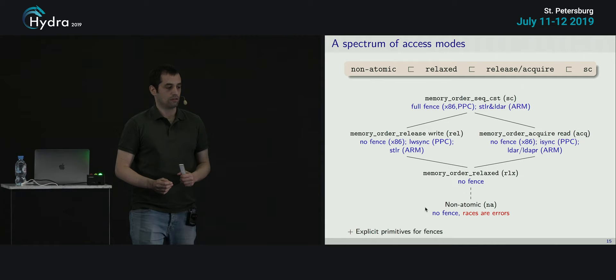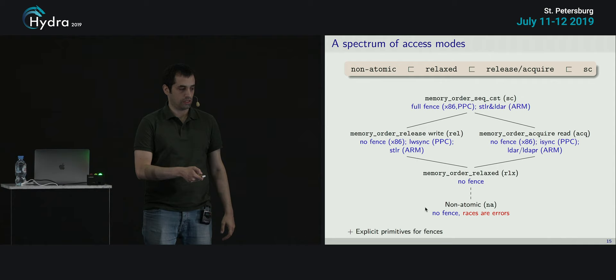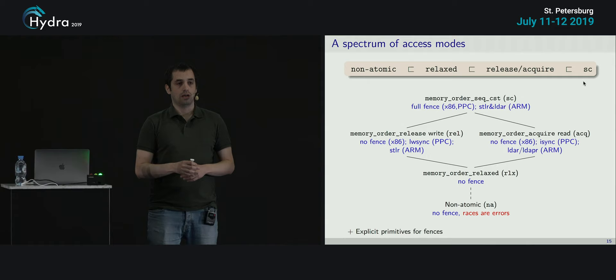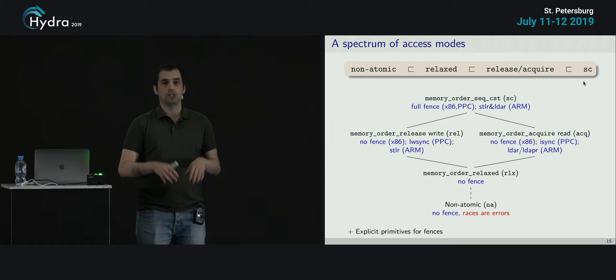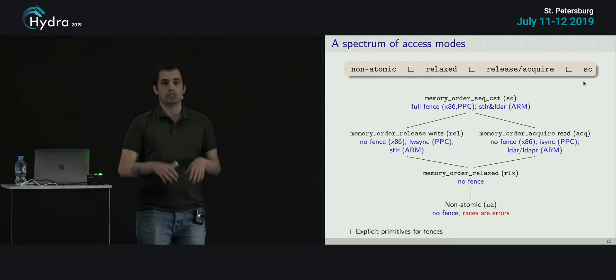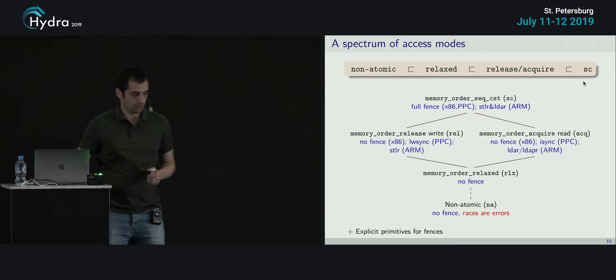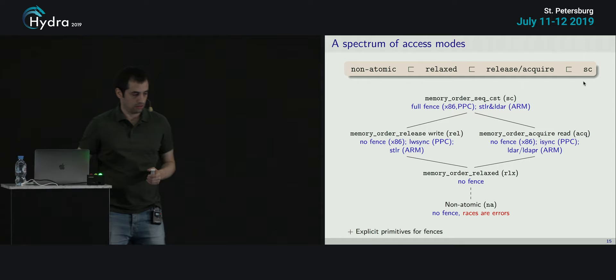Inside the atomic side, we have several access modes: relaxed accesses, release-acquire, and SC (sequentially consistent). As you go up in consistency level, you pay more in performance. Going all the way down to non-atomic or relaxed, we don't have any fences — we just use plain machine accesses. Going up, we put more and more fences. There are also explicit fences in C. The key idea is that it's not going to be an operational semantics like some machine with reorderings or buffers — that's just too complicated. Instead, it will be a mathematical abstract declarative semantics.